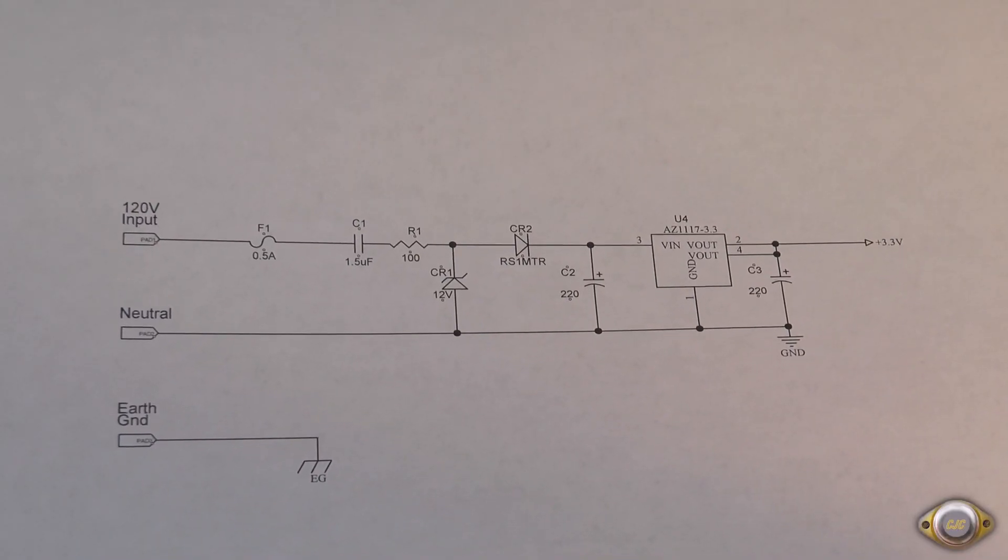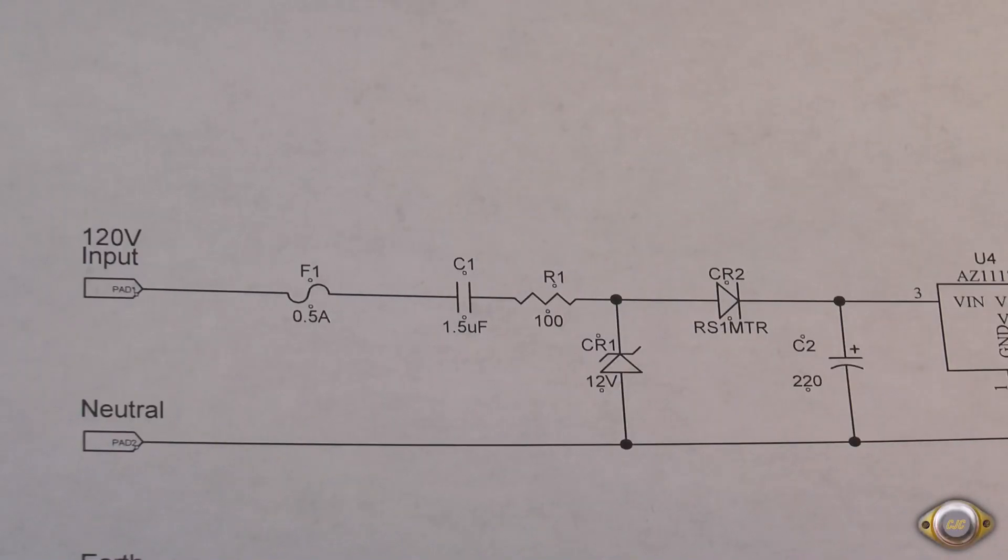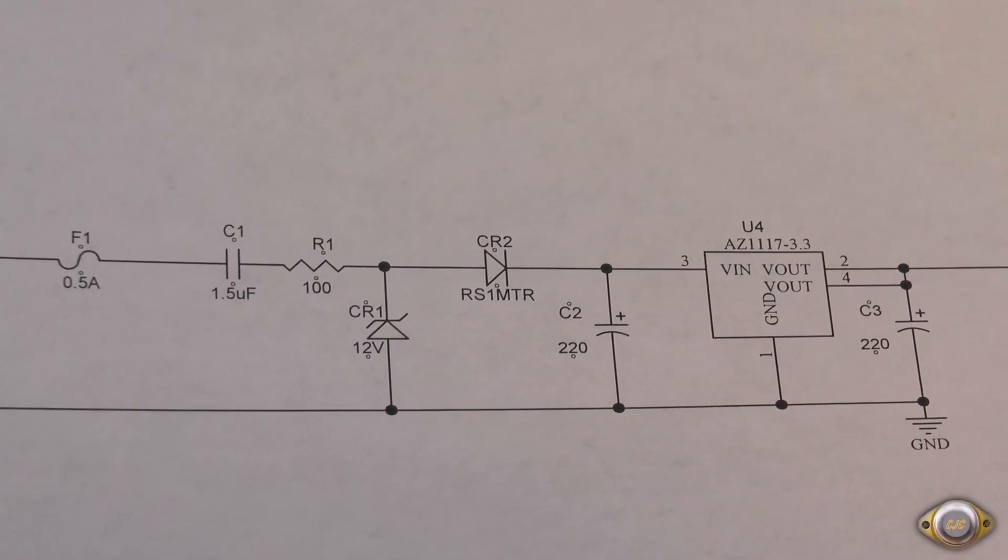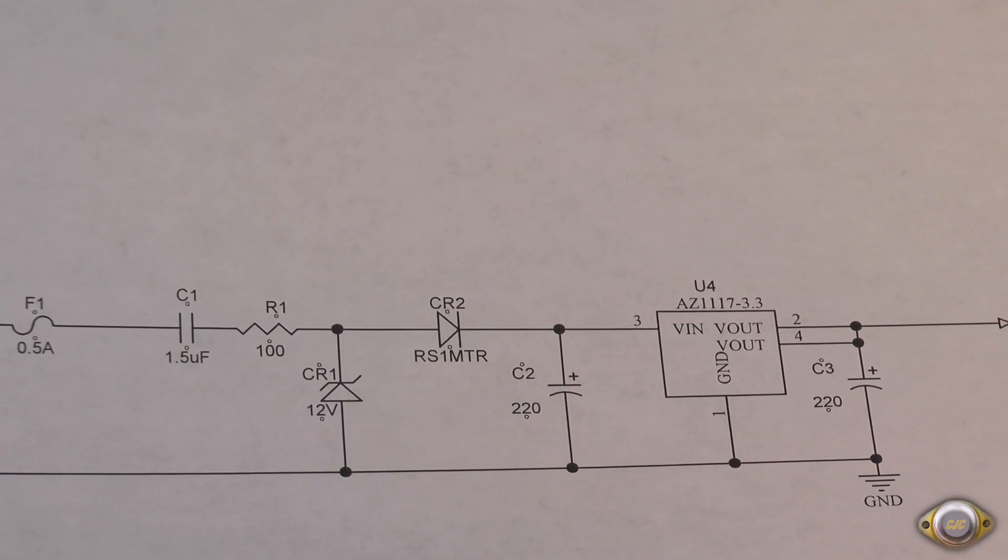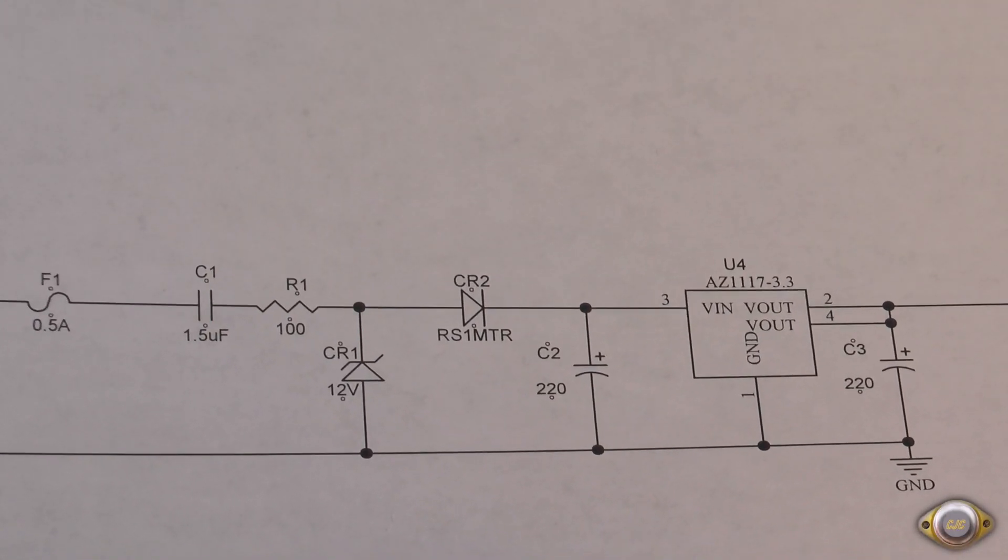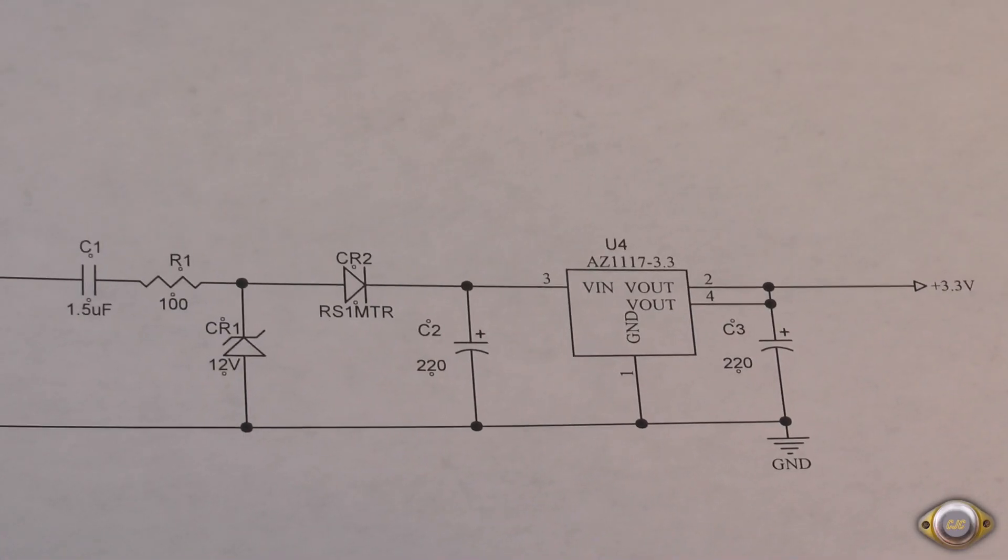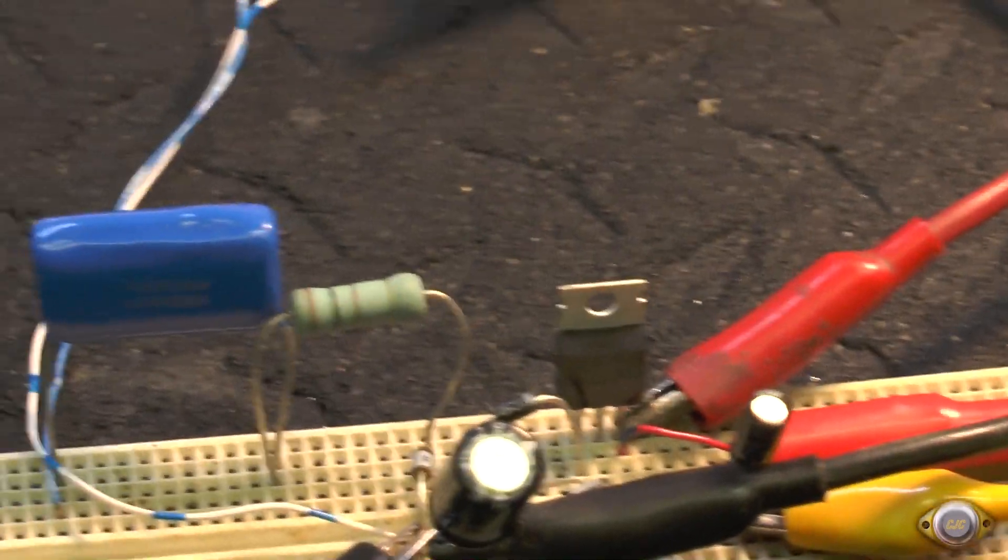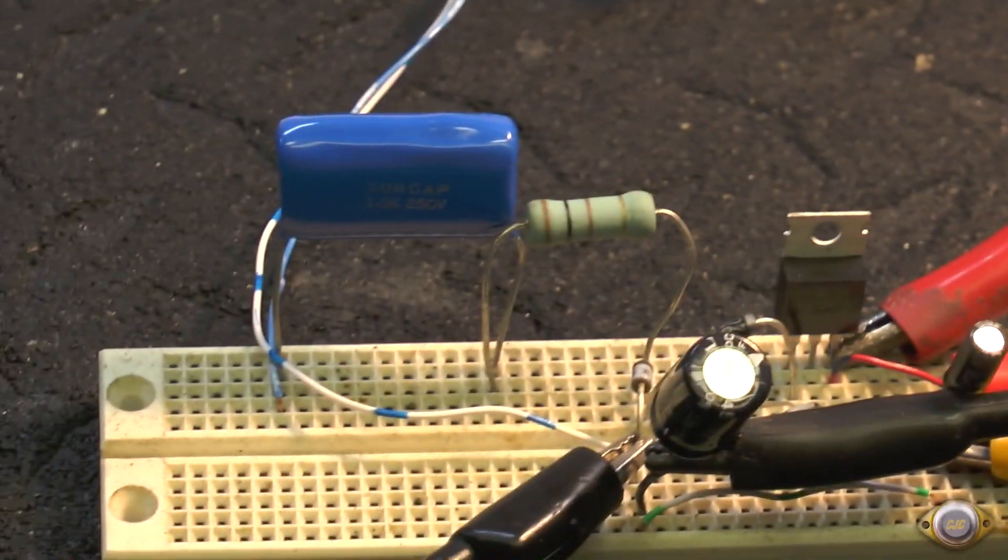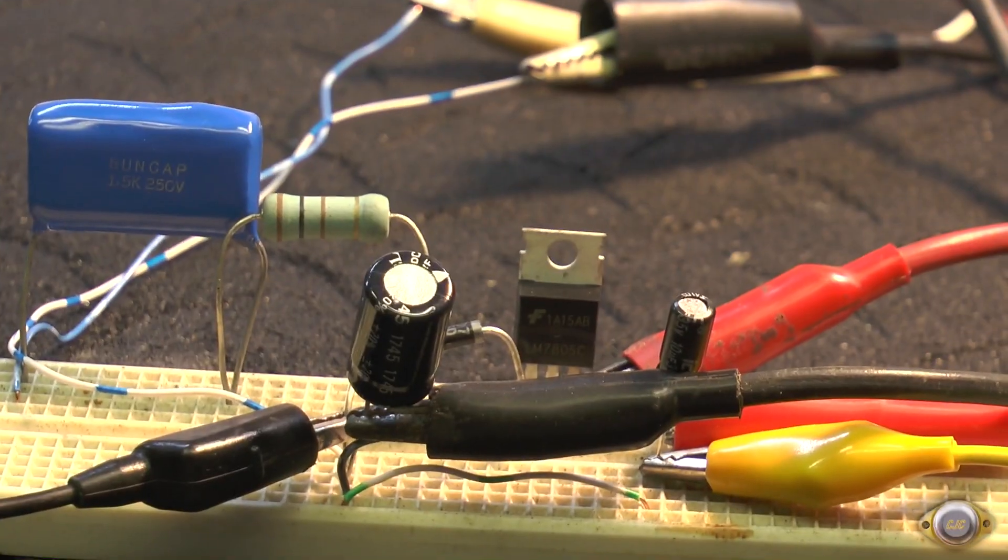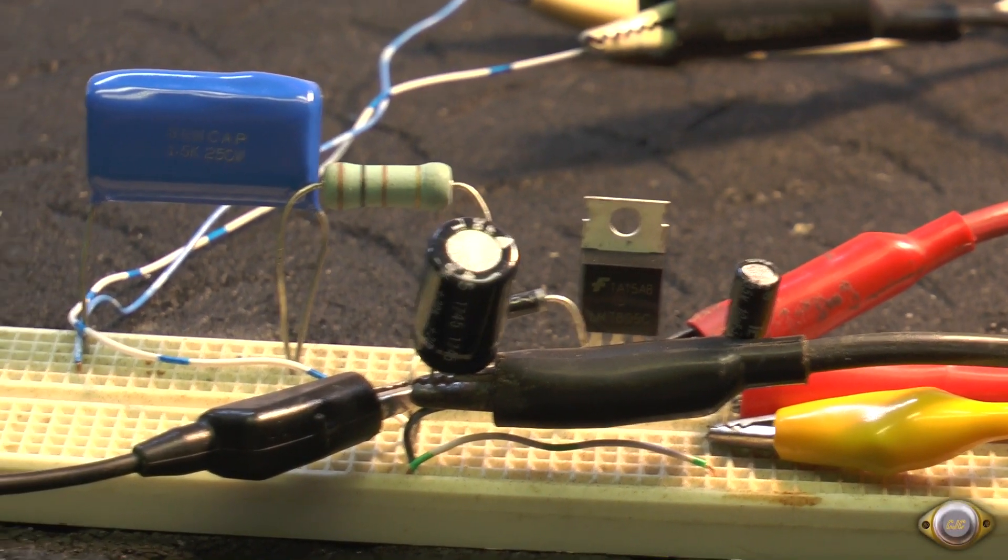I built up the circuit here on the protoboard. We're using a 1.5 microfarad AC coupling capacitor with a 12 volt zener blocking diode. Actually I'm using a 4007. That particular CR2 shown there is a surface mount and a 220 microfarad filter cap. This one shows a 3.3 volt output, I'm going to try it with a 5 volt first just to see how much current I can get at 5 volts out of the circuit. I have it built up here on the protoboard, meters and everything hooked up.